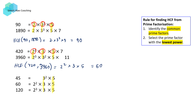And from then, we're going to choose the one with the lowest power from each prime factor. So 3 is the lowest one, and 5 as well. And so our HCF of the set of these three numbers — 45, 60, and 120 — is given by 3 times 5, or simply 15.